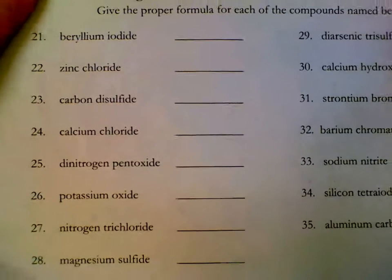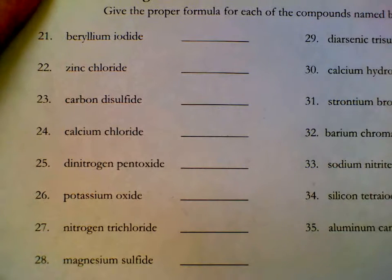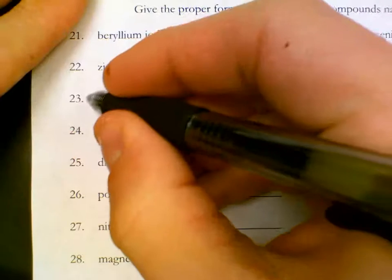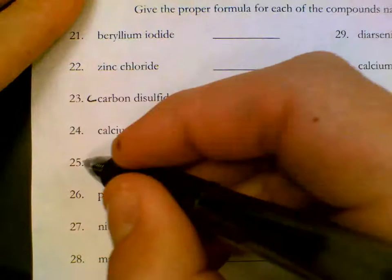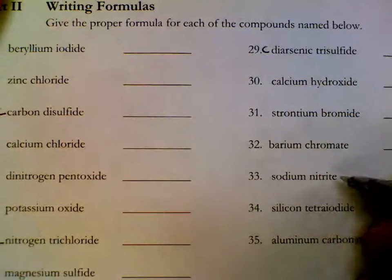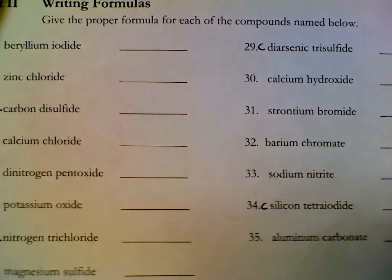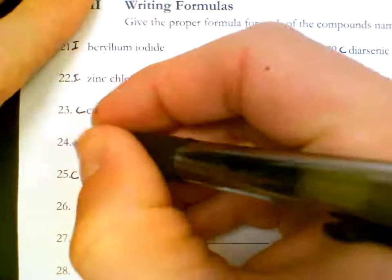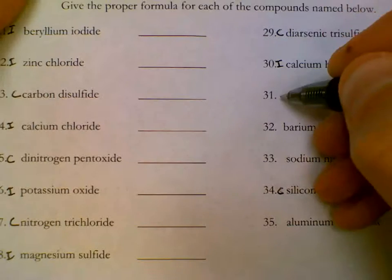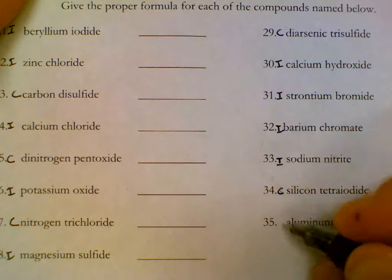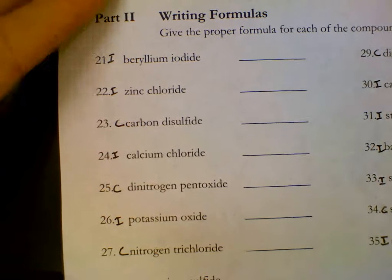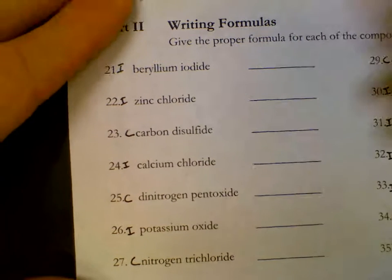Bottom half, we want to again identify do we have an ionic compound or a covalent compound. It doesn't say to do that specifically, but that's the pattern that we've used during this unit. So look in these names for prefixes. Put a C next to anything that has a prefix. The remaining are going to be ionic.